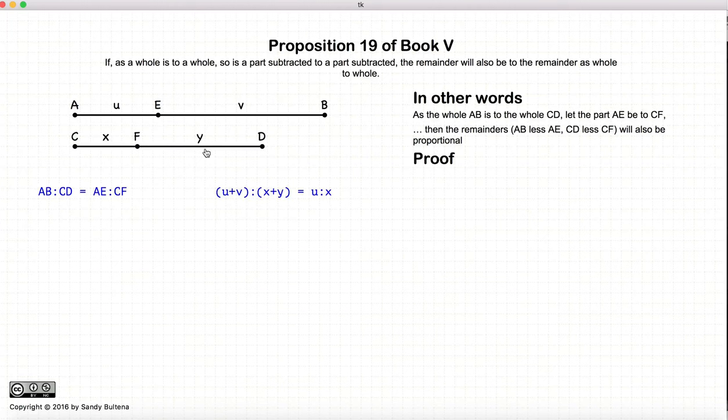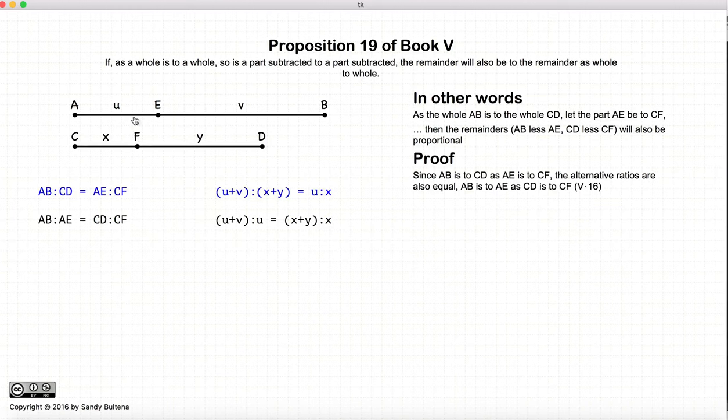So let's look at our proof. Again, our initial conditions are that AB to CD is equal to AE to CF. Since these four magnitudes are proportional, then their alternative ratios are also proportional, according to Proposition 16.